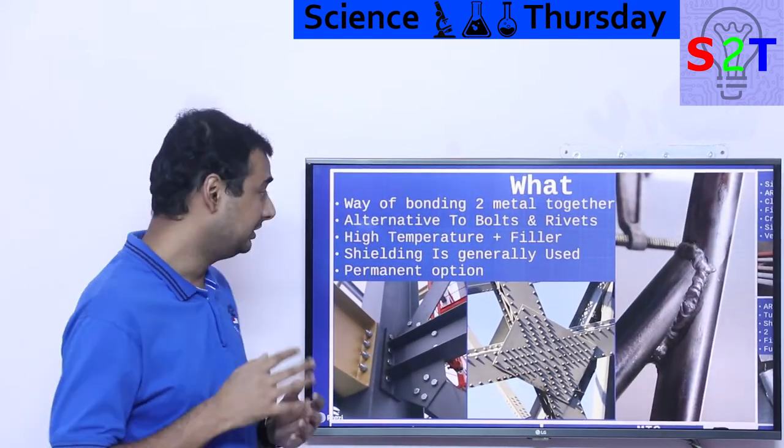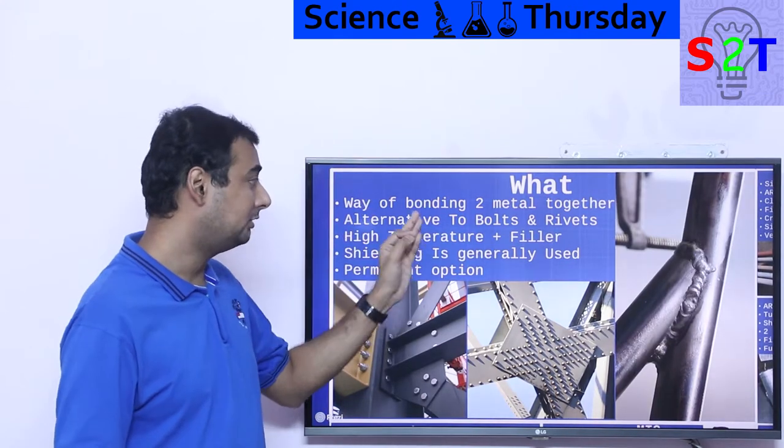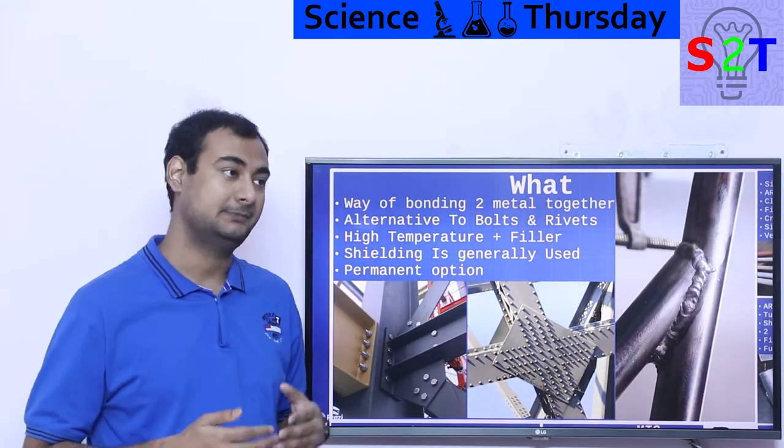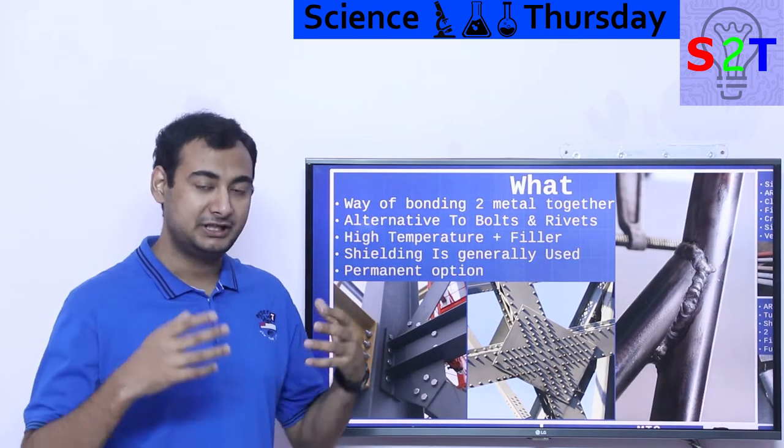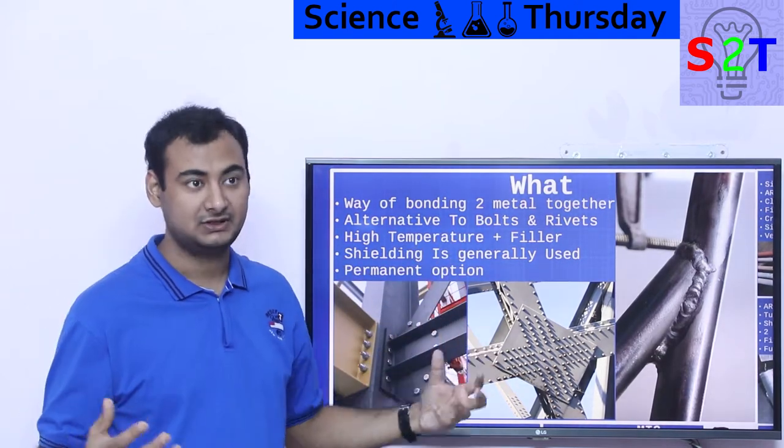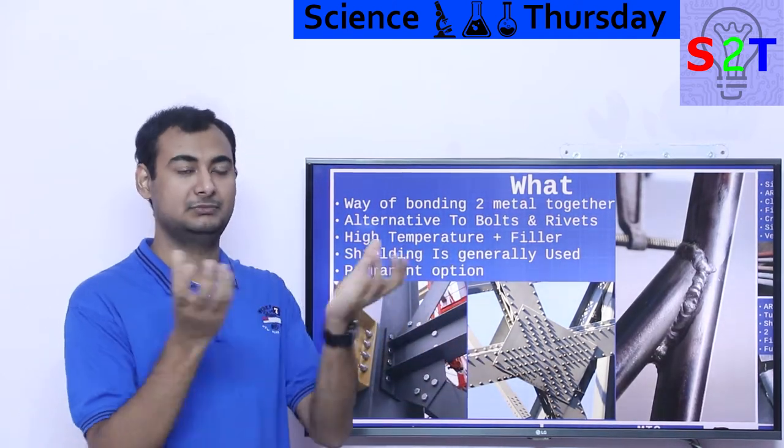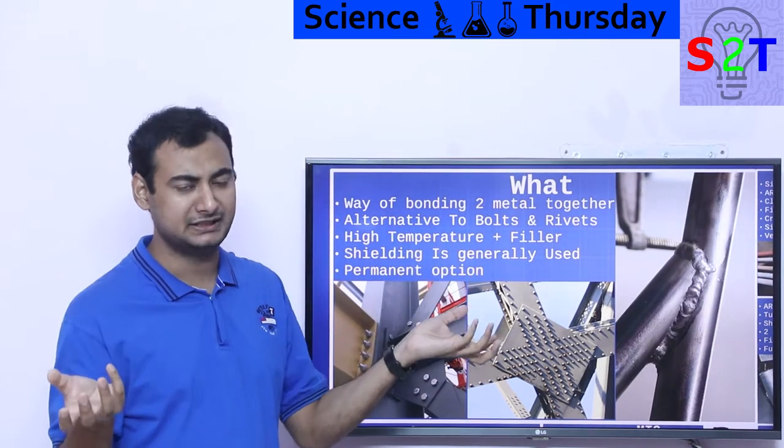What exactly are we talking about? We are talking about a way to bond two metals together. Think of it this way: we had metals for a very long time but we did not have a way to make one coherent large piece. For example, you forge a big unit but it's not big enough. What will you do? You will add another piece.